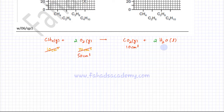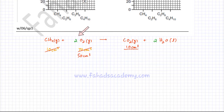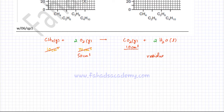10 cm³ of methane reacts with 20 cm³ of O2 and produces 10 cm³ of CO2. We ignore H2O because it's a liquid at room temperature. So 10 cm³ of CO2 gas is produced. The residual gas for methane is 10 cm³ of CO2 plus 50 cm³ of O2, which equals 60 cm³.